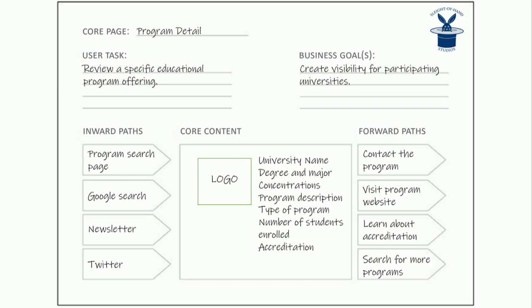Now we prioritize our content — it could be a drawing, a list of fields, whatever each team comes up with. It's a small box intentionally, because we're thinking mobile-first. What are the most important things? Prioritize how you want the content displayed to visitors. So we've done the inward paths, the forward paths, we've got our core content, and we've thought mobile. This is a thinking tool that has changed the way we approach building a new website.